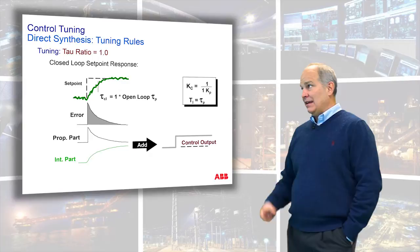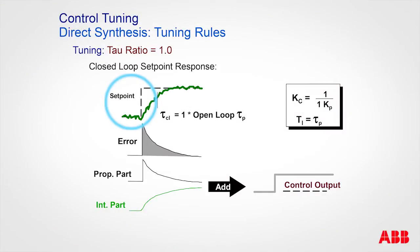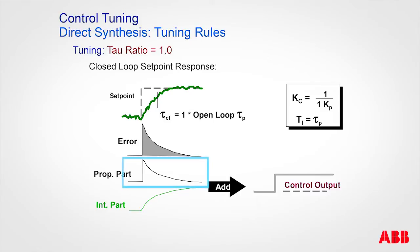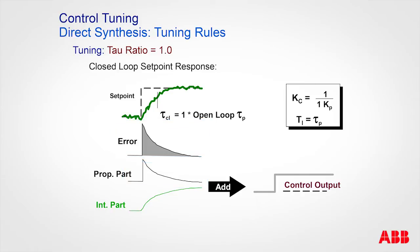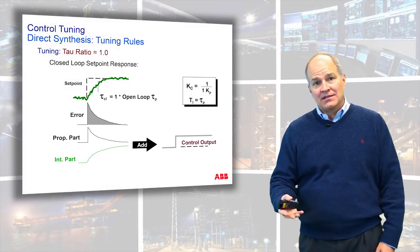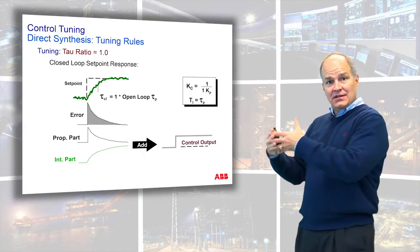At a tau ratio of 1, when you change the set point, the closed-loop time constant equals the open-loop time constant. If you look at the error — set point minus measured value — the proportional component looks proportional to the error, and the integral accumulates the area under the curve and then stops as error goes to zero. You never see the proportional and integral acting separately — you always see the combined output. At tau ratio 1, this looks like a step change in output.